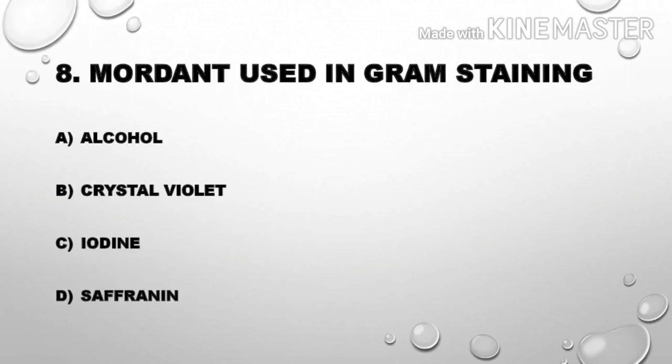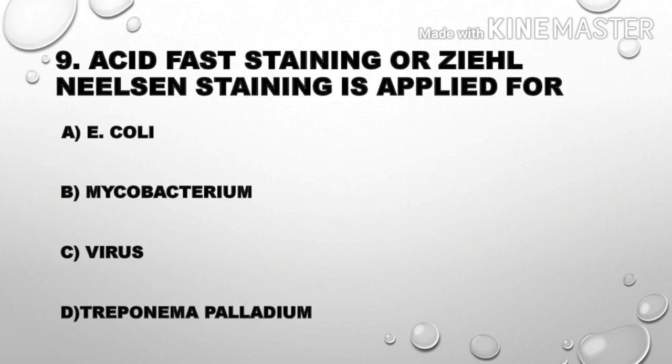Next question: What mordant is used in gram staining? The correct answer is iodine. Following that: acid fast staining or Ziehl-Neelsen staining is applied for — Option A: E. coli; Option B: Mycobacterium; Option C: virus; Option D: Treponema pallidum. Correct answer is Option B, Mycobacterium.